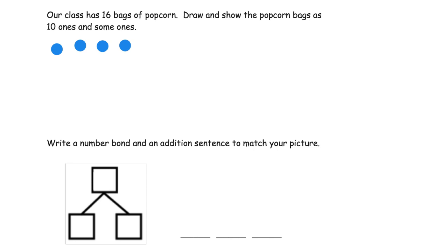1, 2, 3, 4, 5, 6, 7, 8, 9, 10. So that represents my 10 bags of popcorn. And then it says we need 16. So how many more bags of popcorn do I need? I need 6 more. So I'm going to do 1, 2, 3, 4, 5, 6.